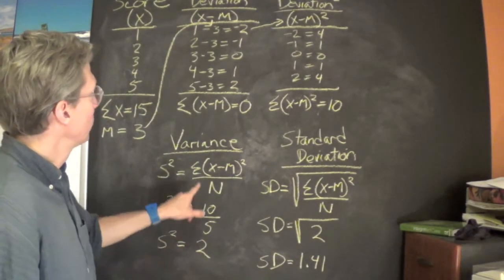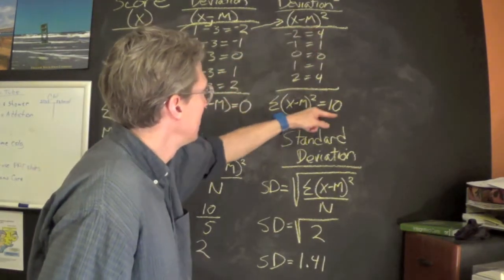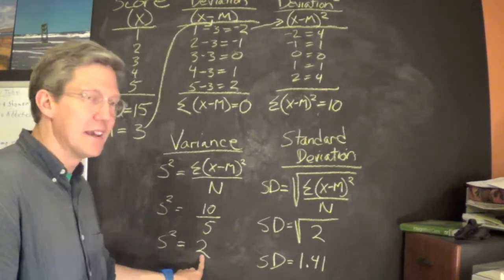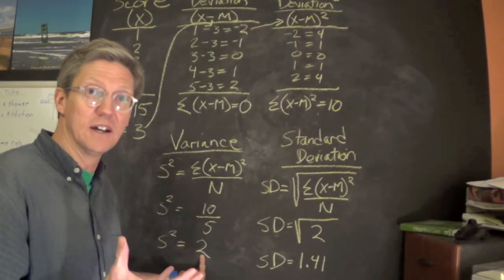The problem with variance is we came here and squared these so that we could sum up and get a number that wasn't zero. Now we're not in the same measurement units as the test scores.